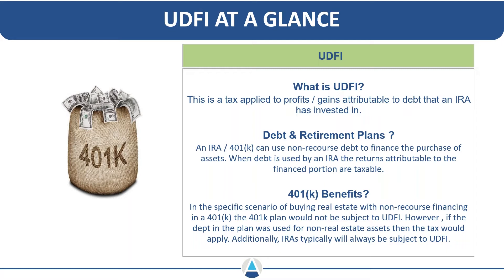UDFI is a tax that applies to profits or gains attributable to debt that an IRA has invested in. An IRA must be invested in something using non-recourse debt to finance the purchase of assets. When debt is used, the returns attributable to the financed portion are taxable. If an IRA is invested in a project with direct debt financing, or into a partnership or LLC that takes on debt to acquire real estate, a UDFI liability may pass through.